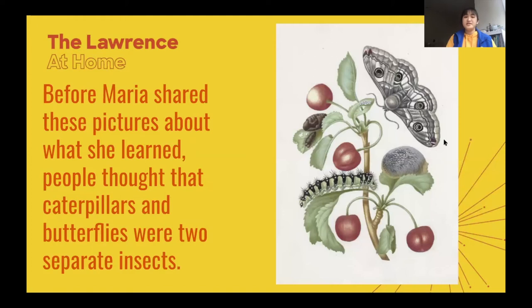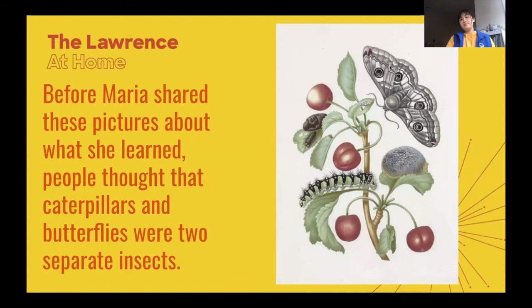Before Maria shared these pictures about what she learned, people thought that caterpillars and butterflies were two separate insects, and that kind of makes sense. If you look at this painting she did, there's a caterpillar and there's also a butterfly or moth here. They look like two different insects — one is a green color, one is a gray color. But because Maria took the time to look at the insects growing up when she was taking care of them, she saw that they were actually the same organism.